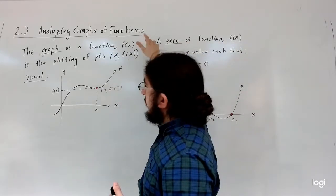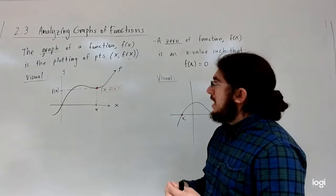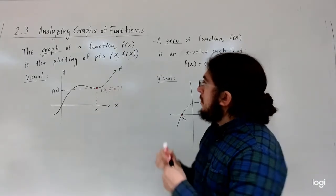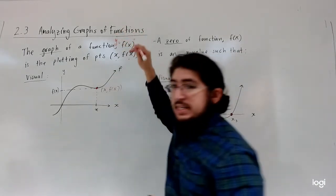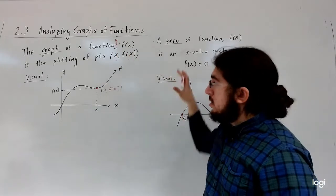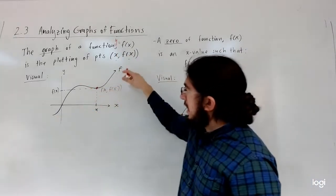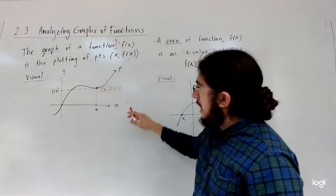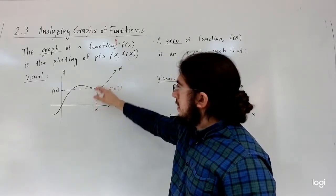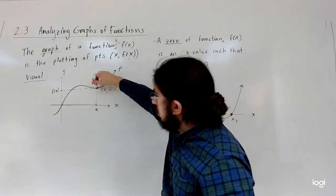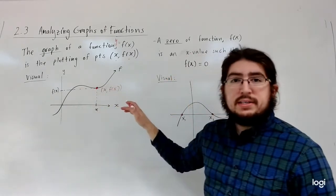The graph of a function f of x is a plotting of the points x, f of x, and the biggest thing to remember is that we always let y equal f of x — it's the y value of a point. So the visualization here is that if we have this curve that represents the graph of f and we pick a particular x value, its y value will be f of x.